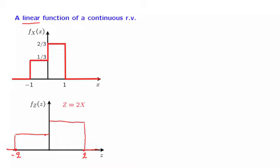Let us now try to figure out the parameters of this PDF. The probability that x is positive is the area of this rectangle, and that area is 2 thirds. So the area of the corresponding rectangle for z should also be 2 thirds, meaning the height of that rectangle should be equal to 1 third. Similarly, the probability that x is negative is the area of that rectangle, which is 1 third. When x is negative, z is also negative, so the probability of negative values should be 1 third, and for the area of that rectangle to be 1 third, the height should be 1 sixth.